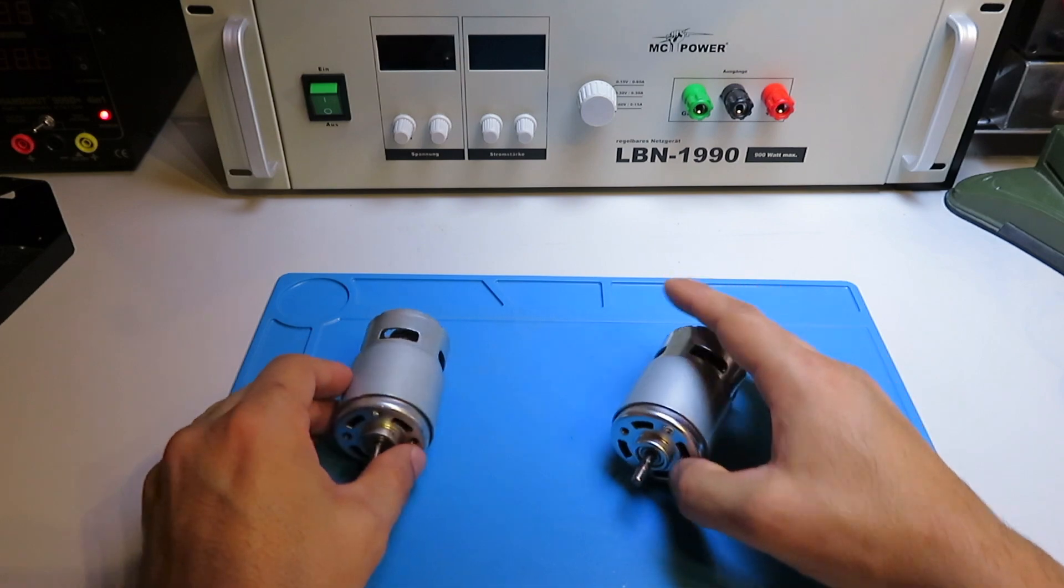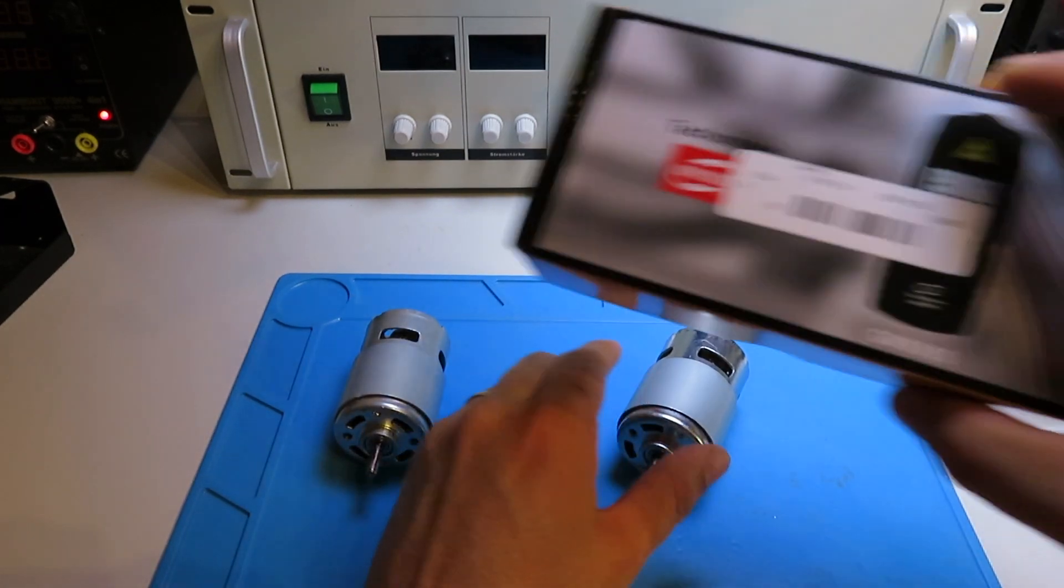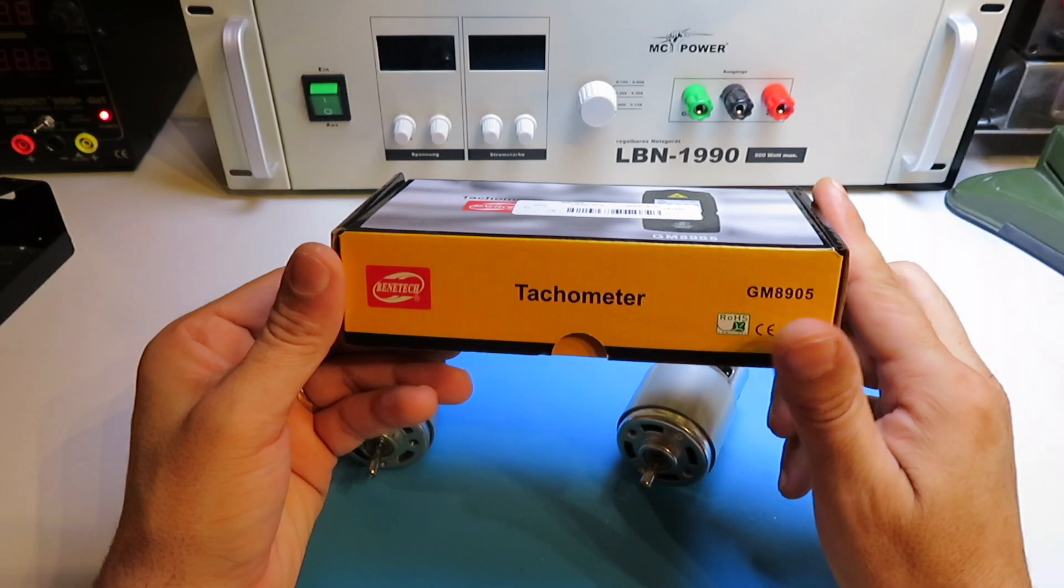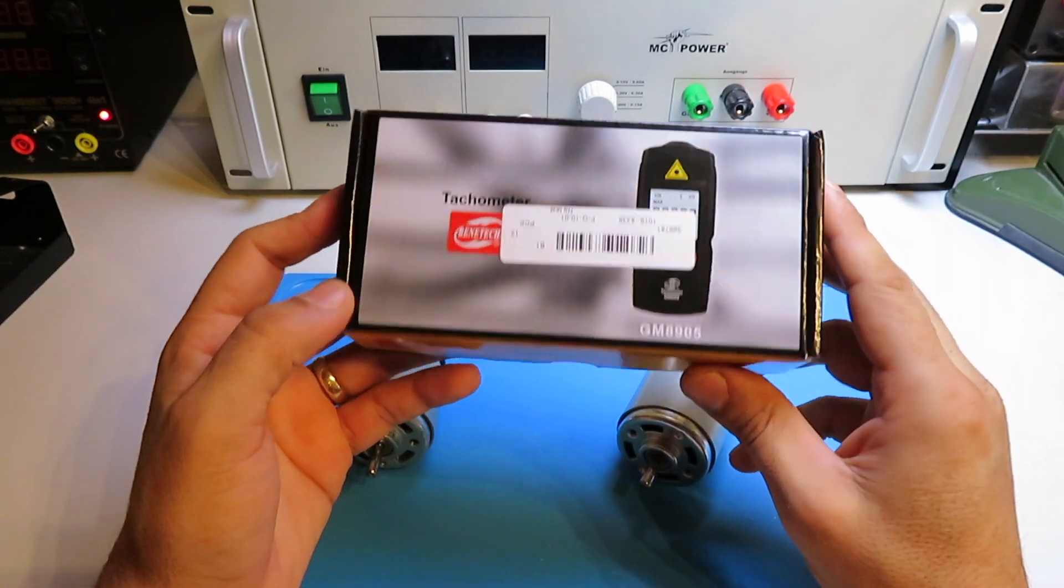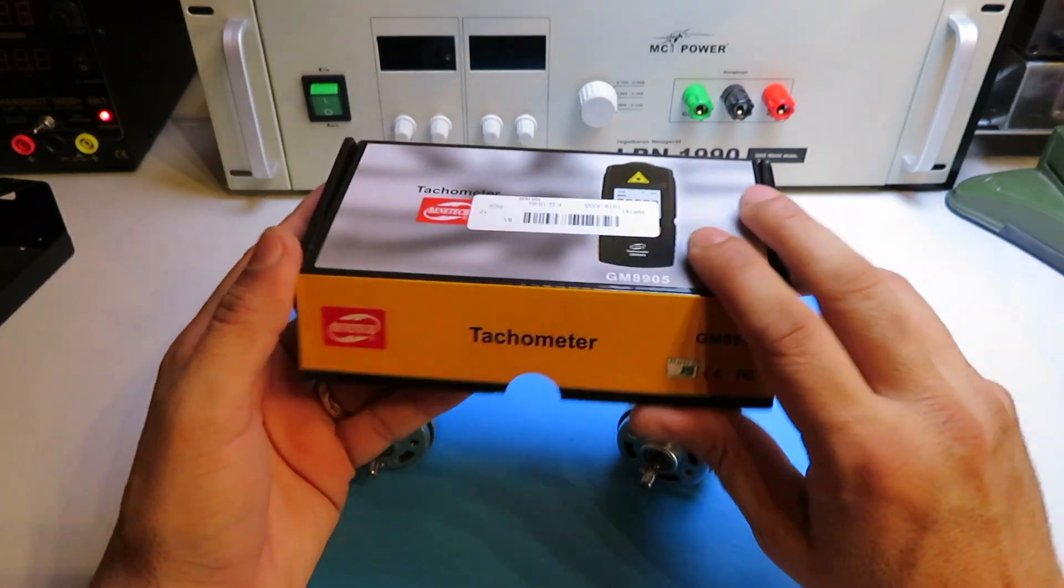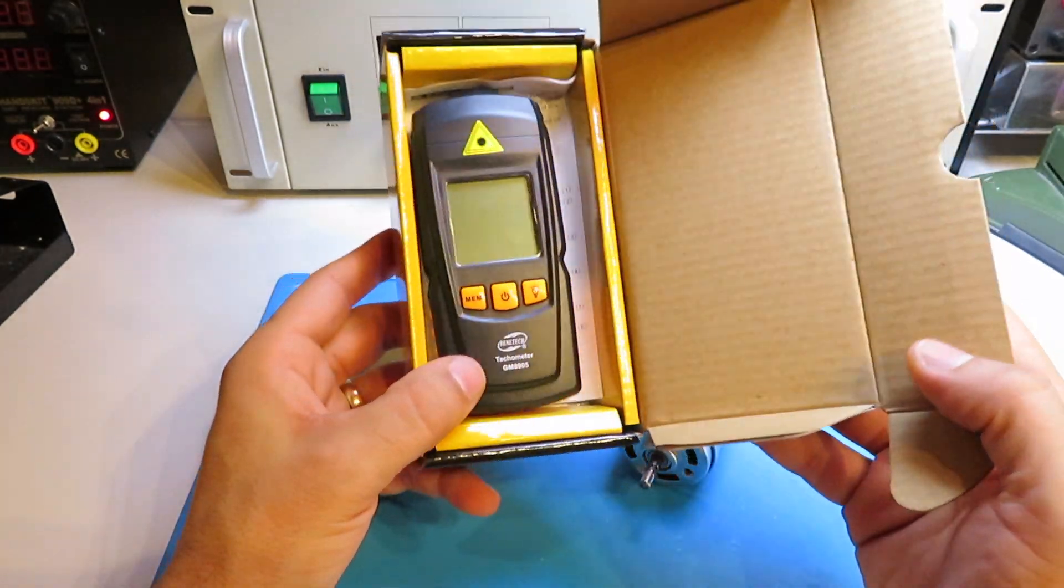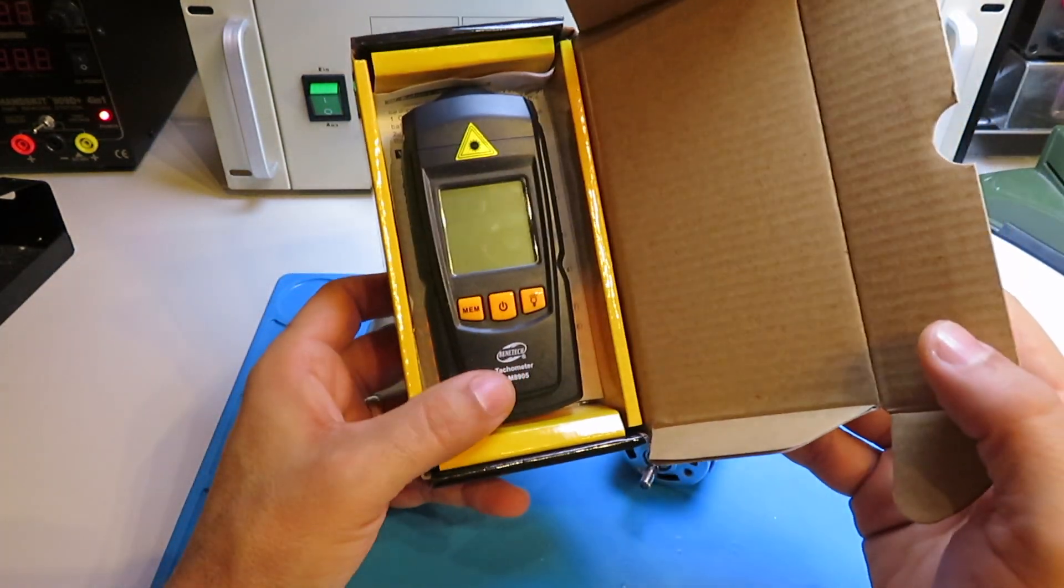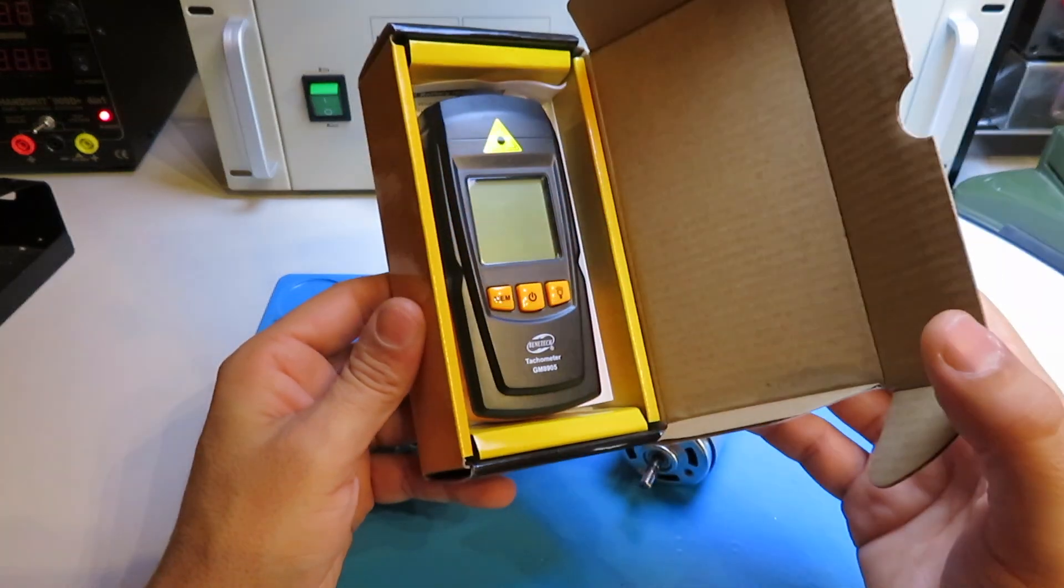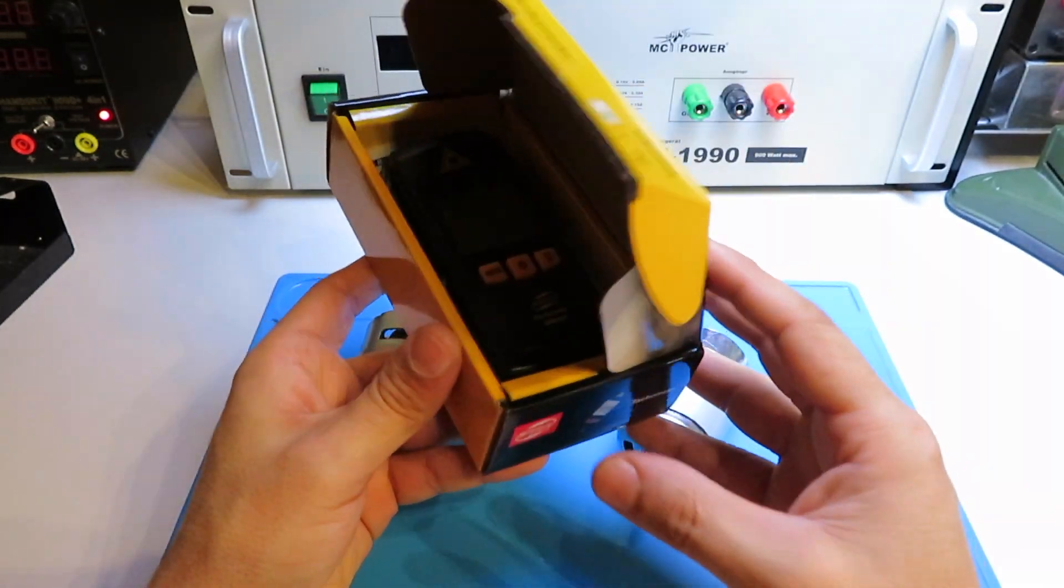So I thought I could record a video and also show you this contactless tachometer from Banggood. If I'm not wrong it costs about 14 dollars and for this price I think that's a must-have. It's quite useful and you can measure the RPM of a DC motor with no load.